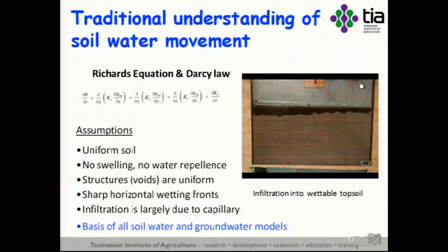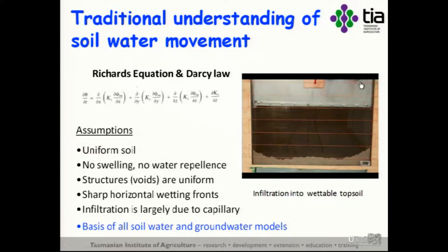Our traditional understanding of soil water movement follows the principles of Darcy's law and Richard's equation, in which you get uniform infiltration through a soil resulting in sharp wetting fronts. These models assume that the soil is always uniform, that things like soil swelling and water repellents simply don't exist, and that structures and voids are uniform and evenly distributed. Infiltration largely results from capillary — the soil sucking, the sorption of water through the soil profile.